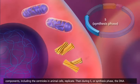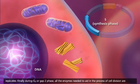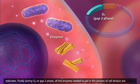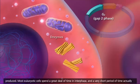Then during S, or synthesis phase, the DNA replicates. Finally, during G2 or GAP2 phase, all the enzymes needed to aid in the process of cell division are produced.